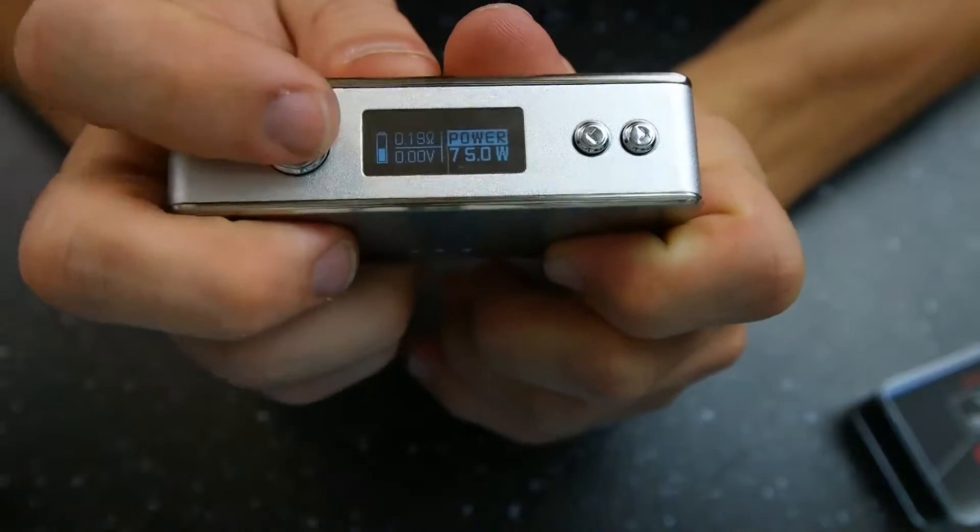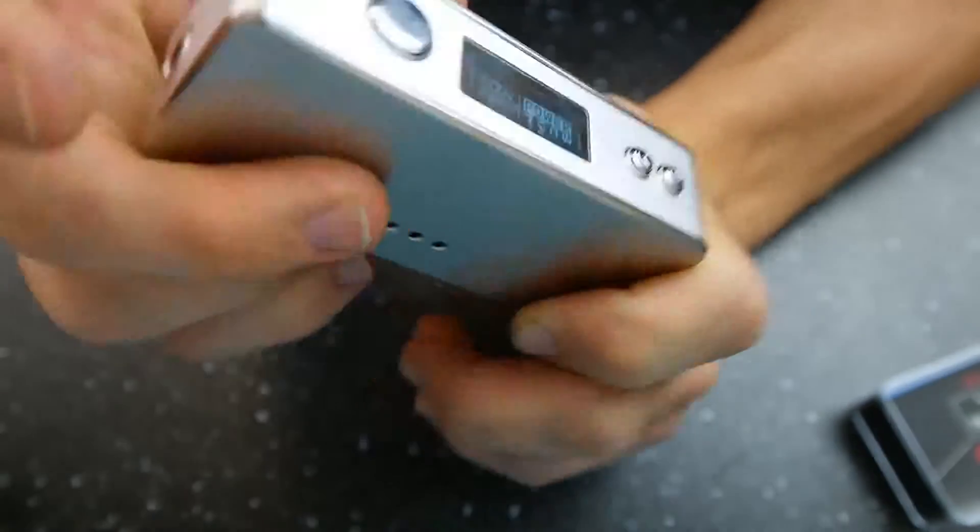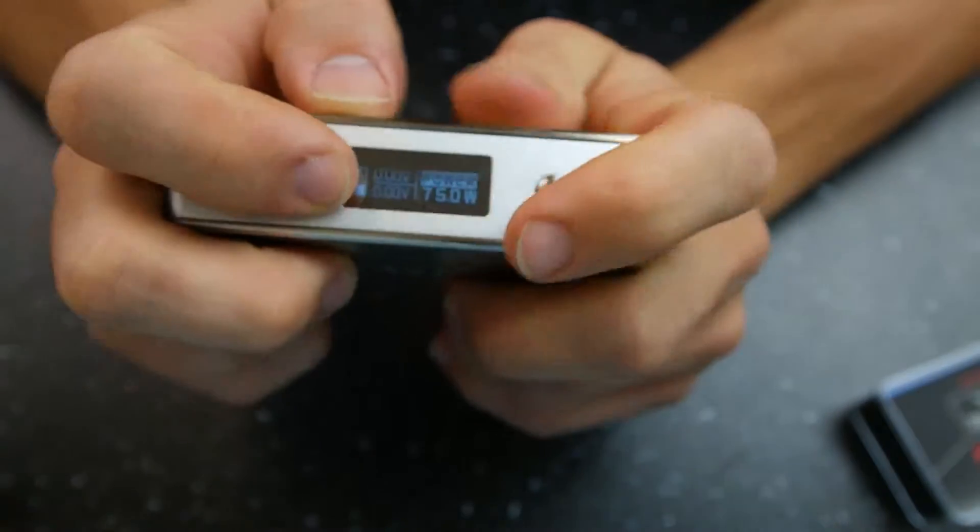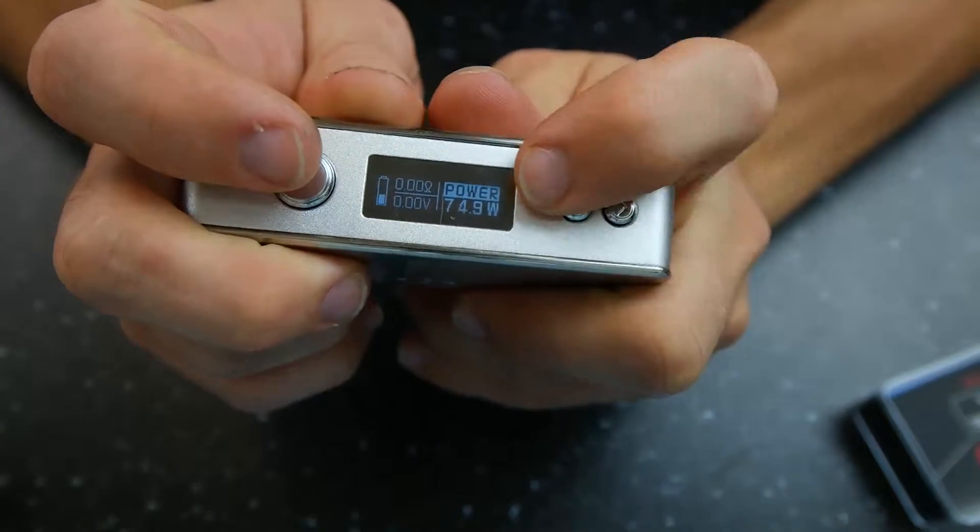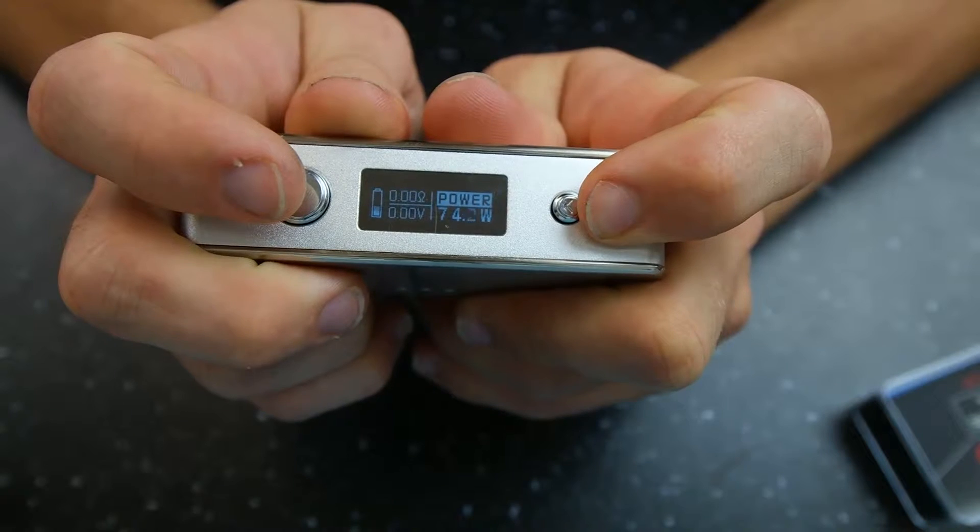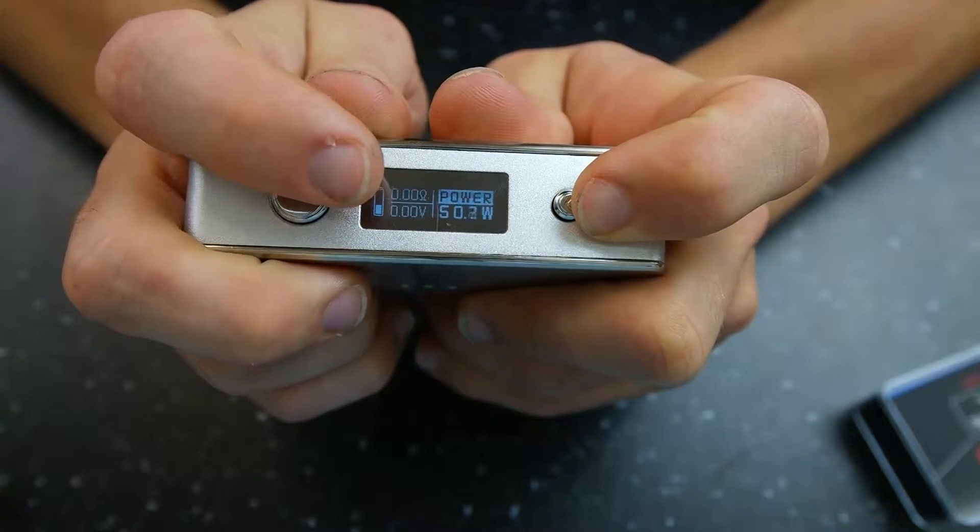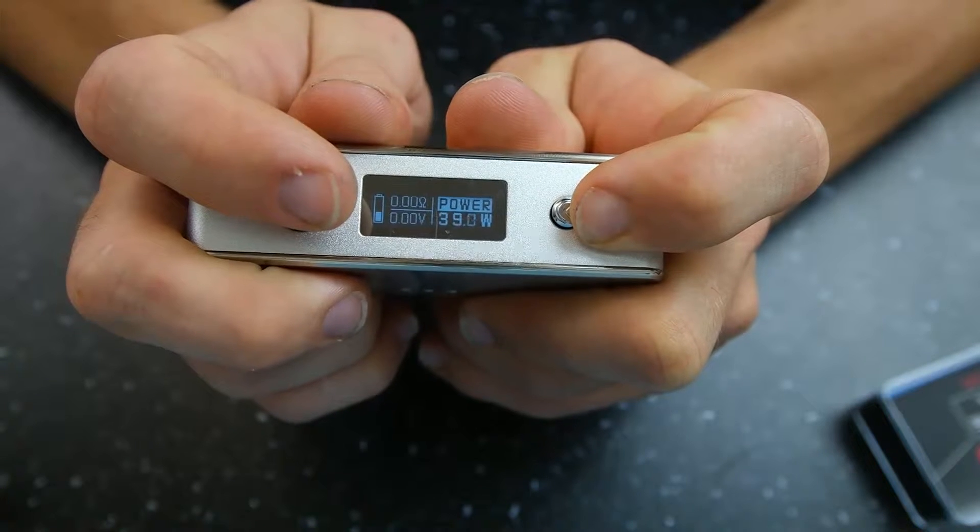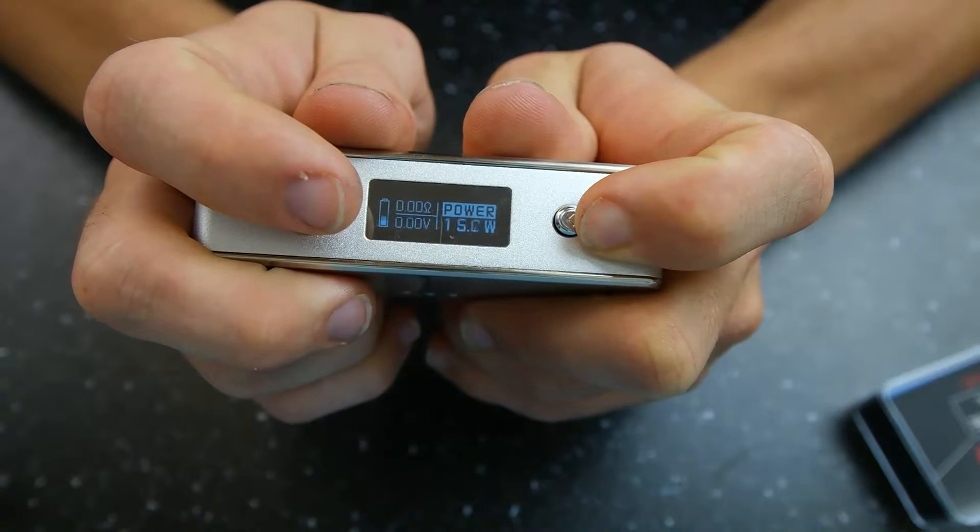So right now we're in the power mode. You have your battery indicator, resistance, which let me go ahead and zero that out real quick because we don't have a tank on there, voltage, your wattage, and it says power mode right there. So I can adjust down and up. It'll have your applied voltage and resistance once everything's actually hooked up. And that's basically all there is in power mode.